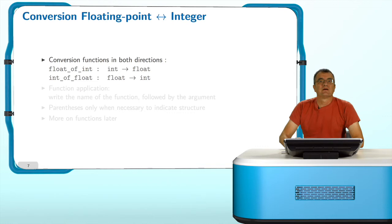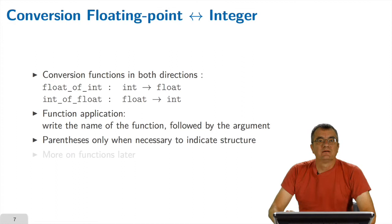Now we have to tell you how to write down a function application. This is very easy. You just write the name of the function followed by the argument. We will come back to functions later during this week. Just let me point out that parentheses are a priori not part of the syntax of function application, so you just write usually the function name followed by the argument. You have to use parentheses only if it is necessary to indicate the structure of a more complicated expression.